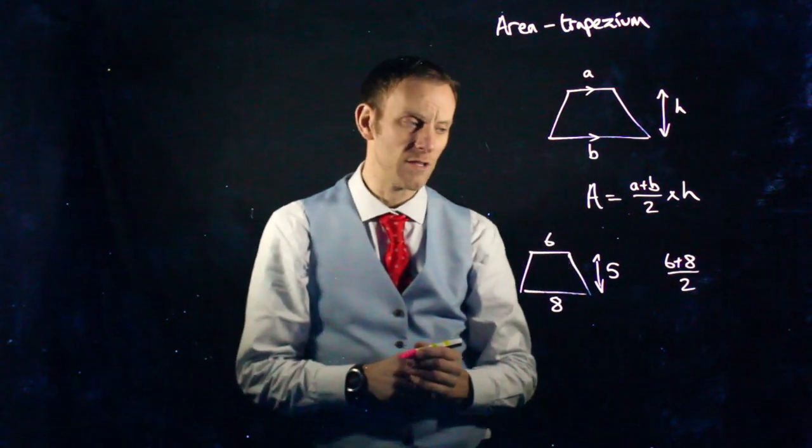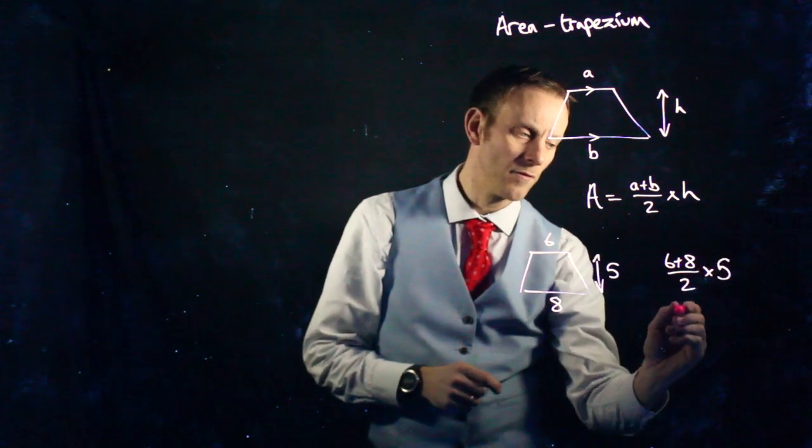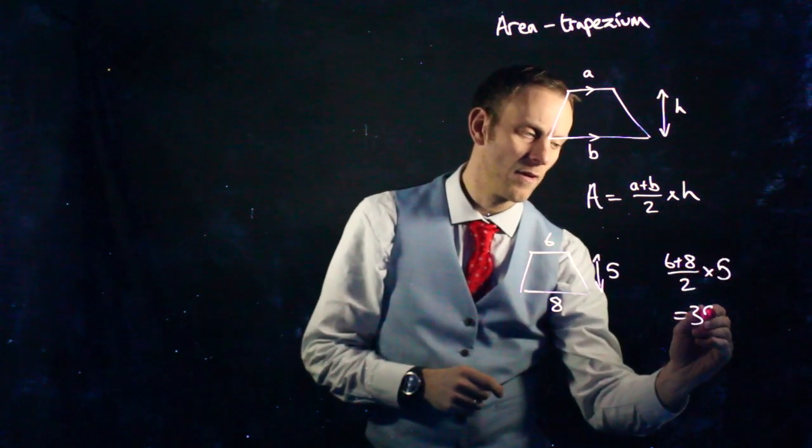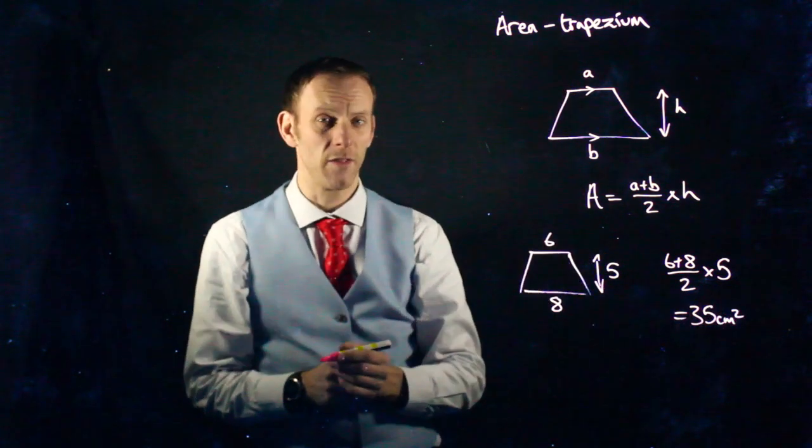6 and 8 is 14. 14 divided by 2 is 7. Then multiply by the height, 5. 7 times 5 is 35 square units. Don't forget the units.